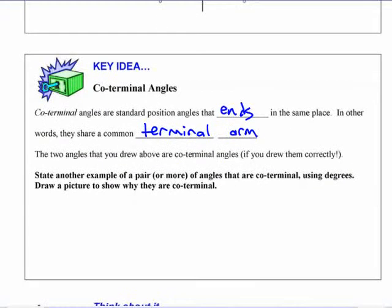A coterminal angle is one that terminates or ends in the same place, in the same position. They share a common terminal arm. Working in degrees for a second here, if I have an angle that is ending here, let's say we have an angle of 140 degrees. If I was to have another negative angle coterminal with that, what negative angle is coterminal with that? Negative 220?